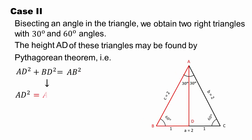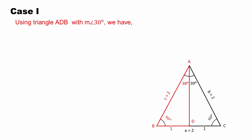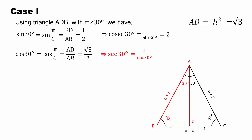We get two right angle triangles. The h value is under root 3. For triangle ADB: sin 30 degree equals BD over AB which is 1 over 2. Cosecant 30 degree follows. Cos 30 degree equals AD over AB which is under root 3 over 2. Secant 30 degree equals 2 over under root 3. Tan 30 degree equals BD over AD.